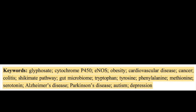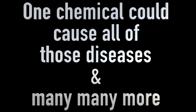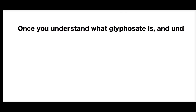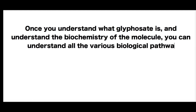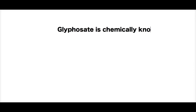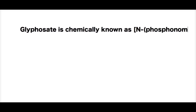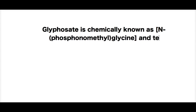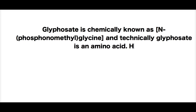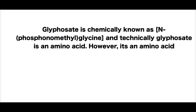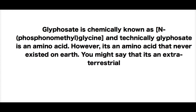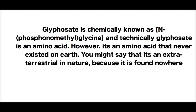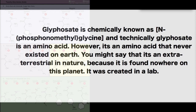In actuality, yes, one chemical could cause all of those diseases and many, many more. And once you understand what glyphosate is and understand the biochemistry of the molecule, you can understand all of the various biological pathways that glyphosate would affect. Glyphosate is, chemically, known as N-phosphonomethylglycine, and technically, glyphosate is an amino acid. However, it's an amino acid that never existed on Earth — you might say it's extraterrestrial in nature because it is found nowhere on this planet. It was created in a lab.